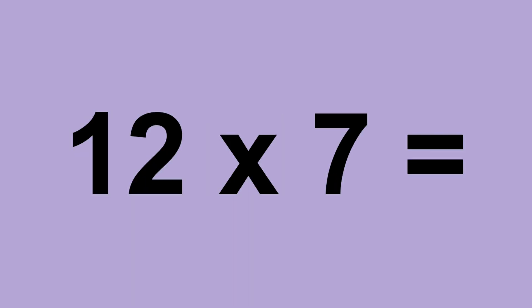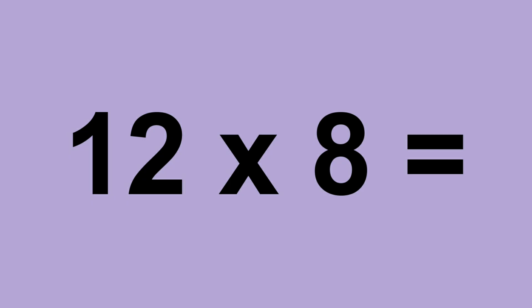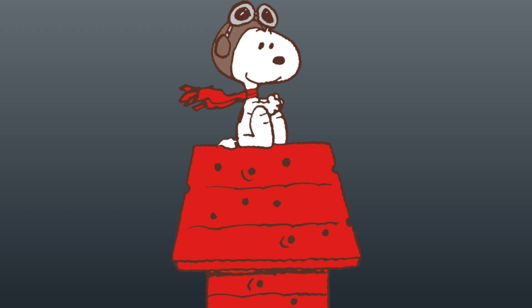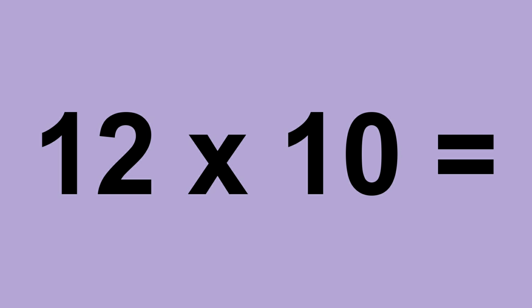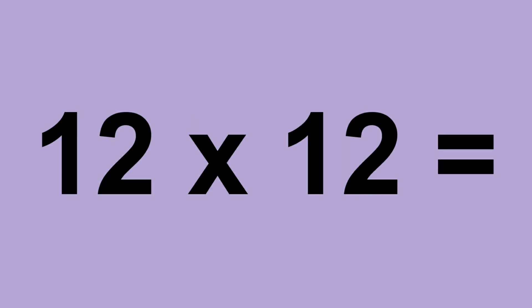12 times 7 equals 84. 12 times 8 equals 96. 12 times 9 equals 108. 12 times 10 equals 120. 12 times 11 equals 132. 12 times 12 equals 144.